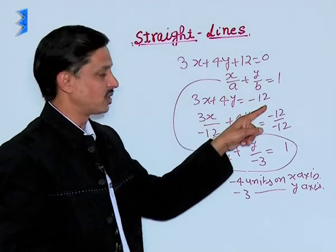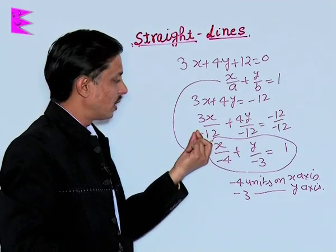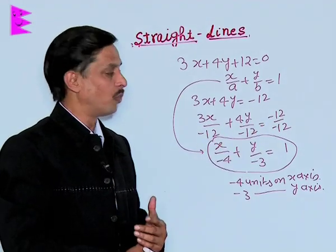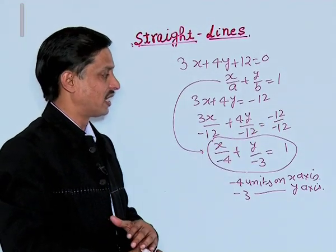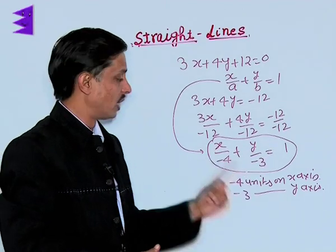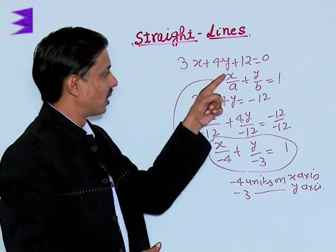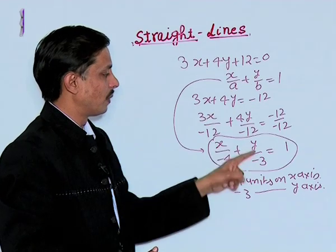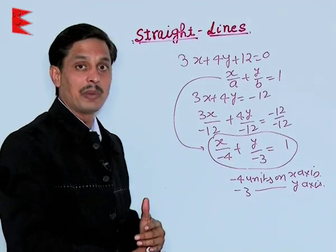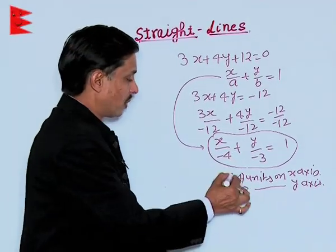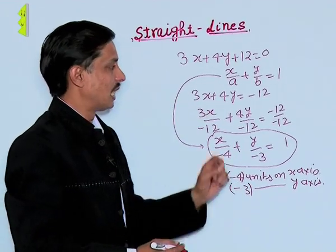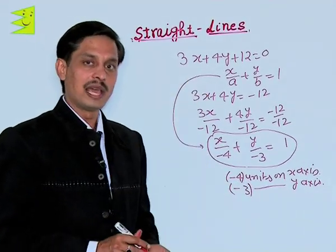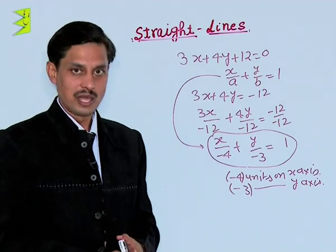First, transfer the constant, then divide each term of the equation on both sides by the same constant to make the right-hand side 1. Then obtain it as x upon a, y upon b equals 1, and with comparison, we can find what intercepts the line makes on the x-axis and y-axis.